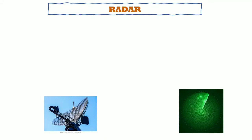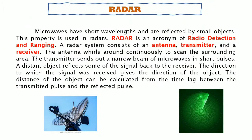The next application of microwaves is radar, which stands for Radio Detection And Ranging. Microwaves have short wavelengths and are reflected by small objects. A radar system consists of an antenna, transmitter, and a receiver. The antenna whirls around continuously to scan the surrounding area. The transmitter sends out a narrow beam of microwaves in short pulses; a distant object reflects some of the signal back to the receiver. The direction of the received signal gives the direction of the object, and the distance can be calculated from the time lag between the transmitted and reflected pulse. Radar is used in airports and on large ships or cruise ships to detect approaching objects.